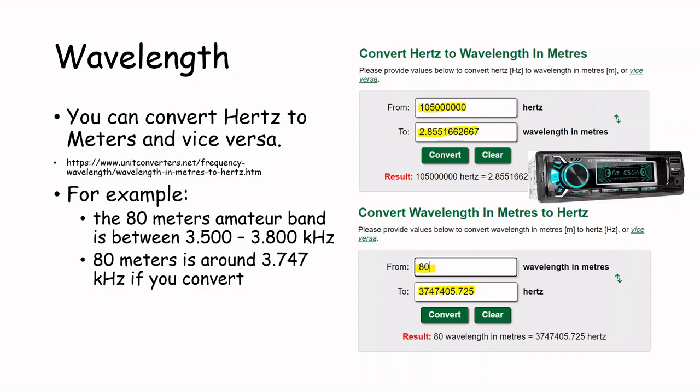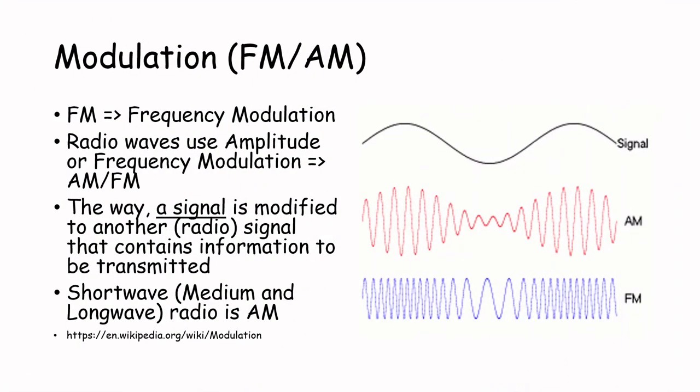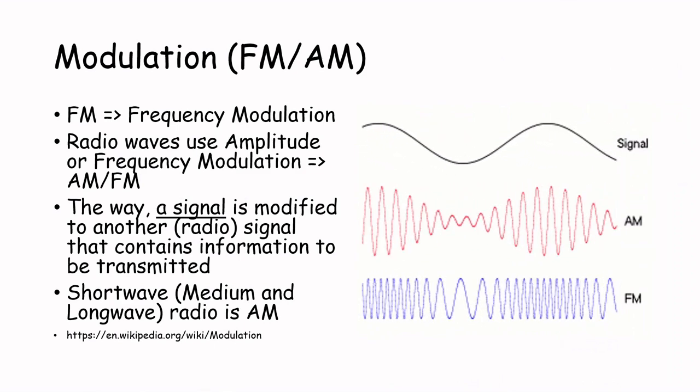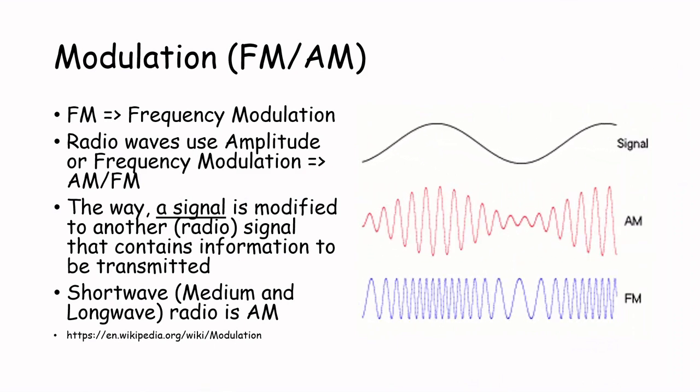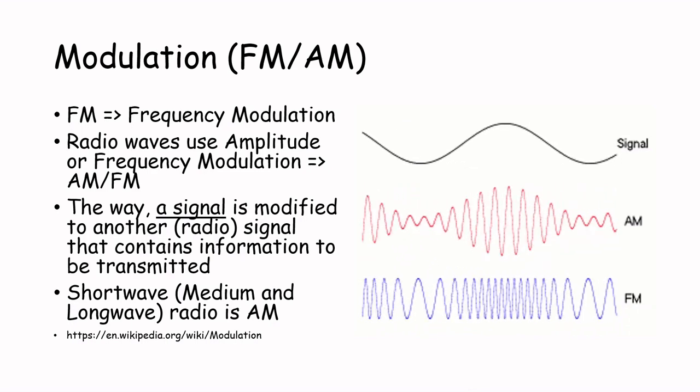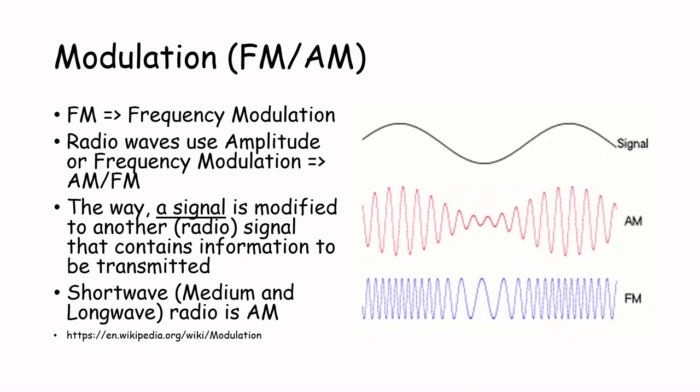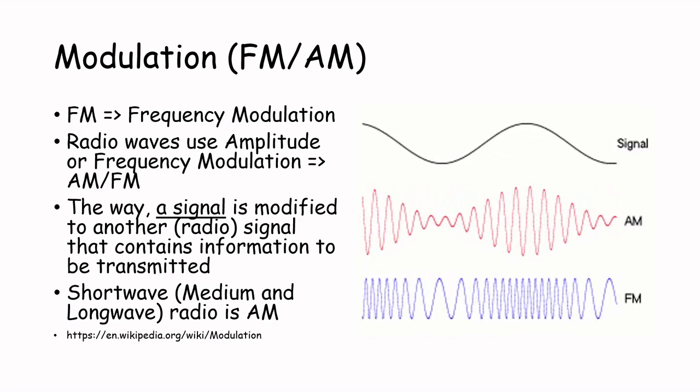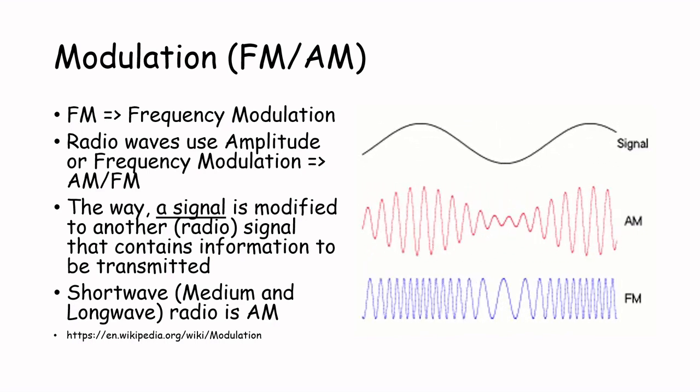Now you know what is 105 megahertz in our example. But what does FM mean? FM means frequency modulation. Radio waves use frequency or amplitude modulation. This is the same as FM and AM. Modulation is the way a signal is modified to a radio signal to transport information.